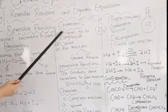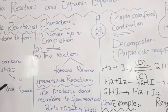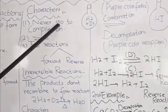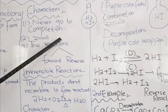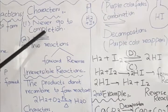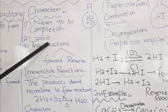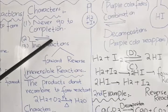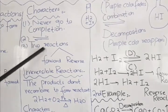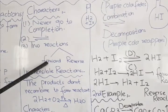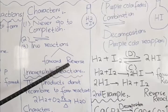Next, what are the characteristics of reversible reactions? The characteristics are: first, this reaction is written with a double arrow, which indicates the reaction goes forward and backward. Reactants are converted into products and products are converted back into reactants. The third characteristic is that the forward reaction and the reverse reaction do not go to completion.